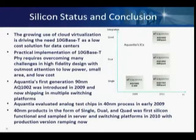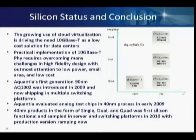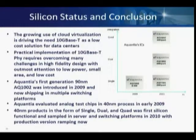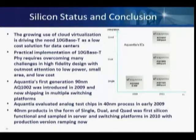In conclusion, cloud computing and server virtualization are driving demand for 10G links, which must be inexpensive and easy to deploy. 10G base-T is the best solution as long as it's low power and low area to result in inexpensive options. As technology matures, it's getting there, and Aquantia has been the leader on that front.